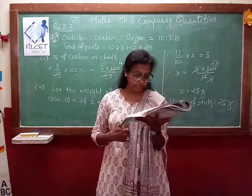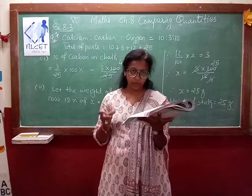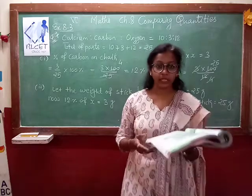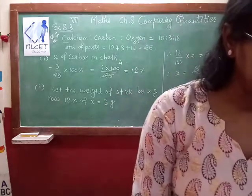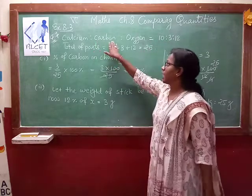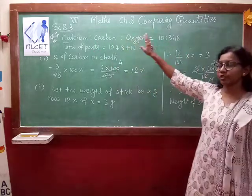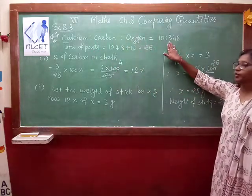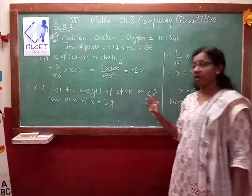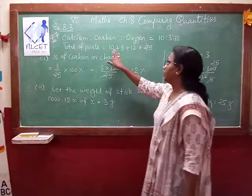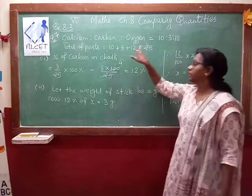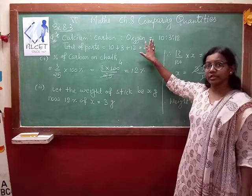First, what you will find? Whatever ratios are given to you, from that you will find the percentage of carbon in chalk. What is given? Calcium to carbon to oxygen — this ratio is equal to 10:3:12. So we have to first find the total of these parts, which is equal to 10 plus 3 plus 12, which gives you 25. So total is 25.